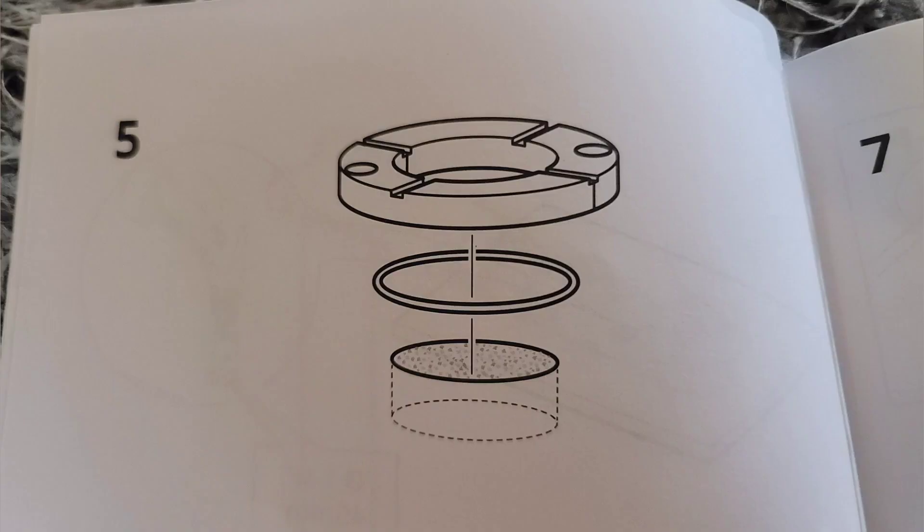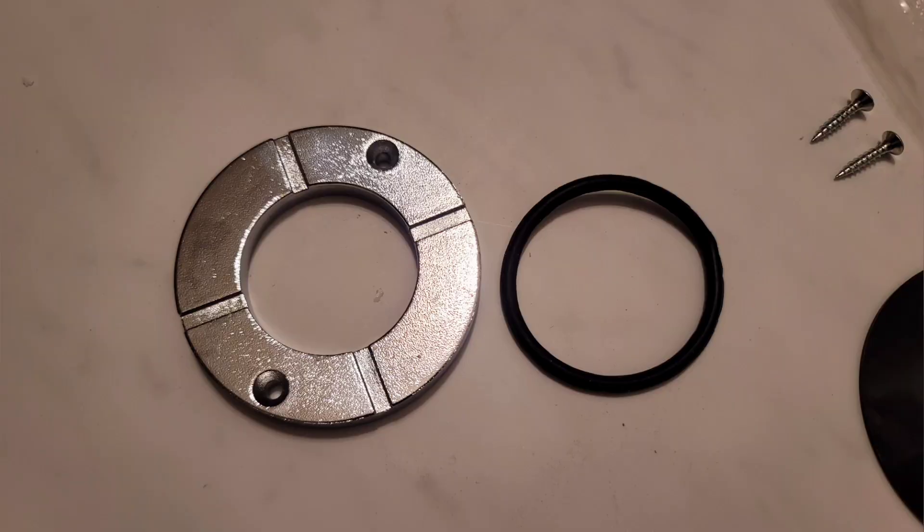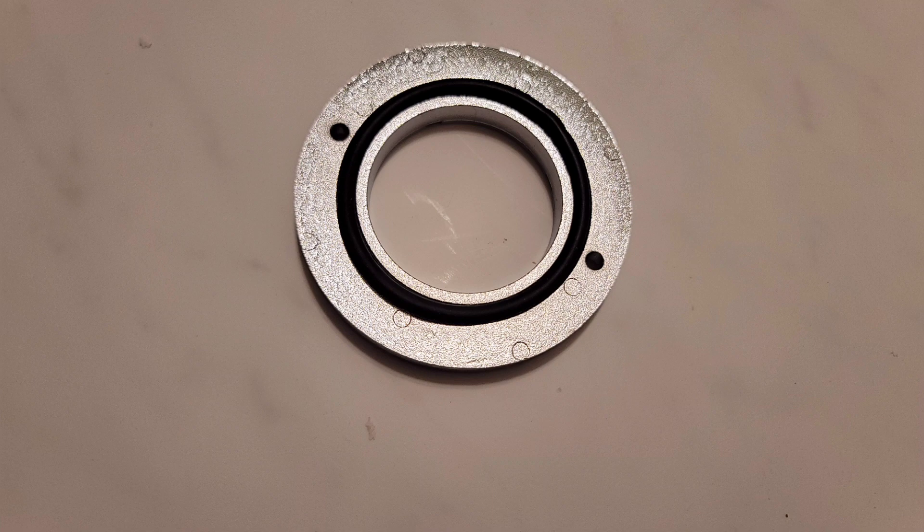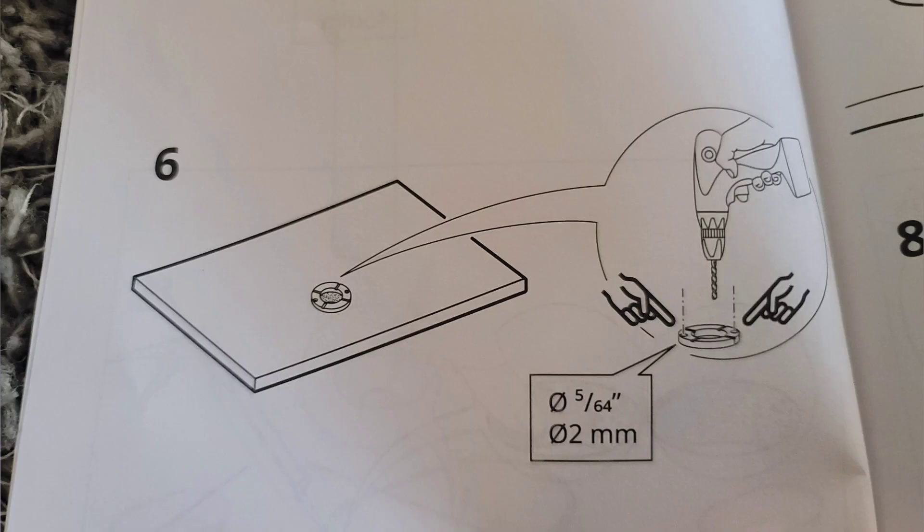Step five, assemble the bottom base of the sink. It's just this little plate and rubber band. And, it just goes inside on the bottom like that. Step six is just saying to mark exactly where you're going to drill the holes.